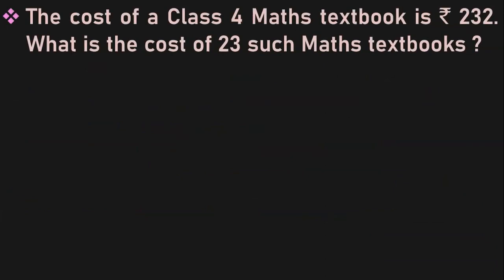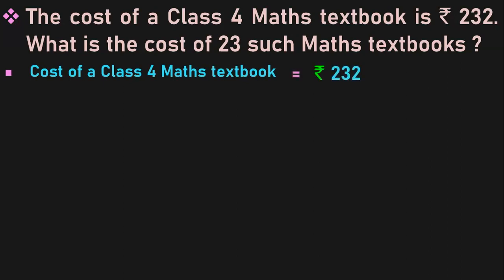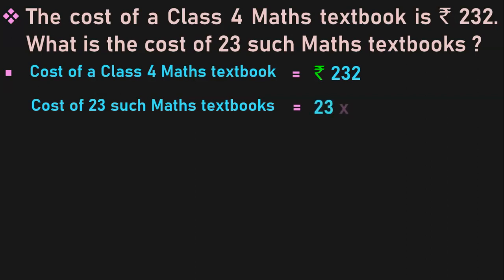The cost of a class 4 maths textbook is rupees 232. What is the cost of 23 such maths textbooks? Let us write down the statements first. Cost of a class 4 maths textbook is equal to rupees 232. We have to find out the cost of 23 such maths textbooks. One maths textbook is rupees 232, so 23 maths textbooks will be 23 into 232. This concept comes under money multiplication and does not involve any decimals or the paisa part.